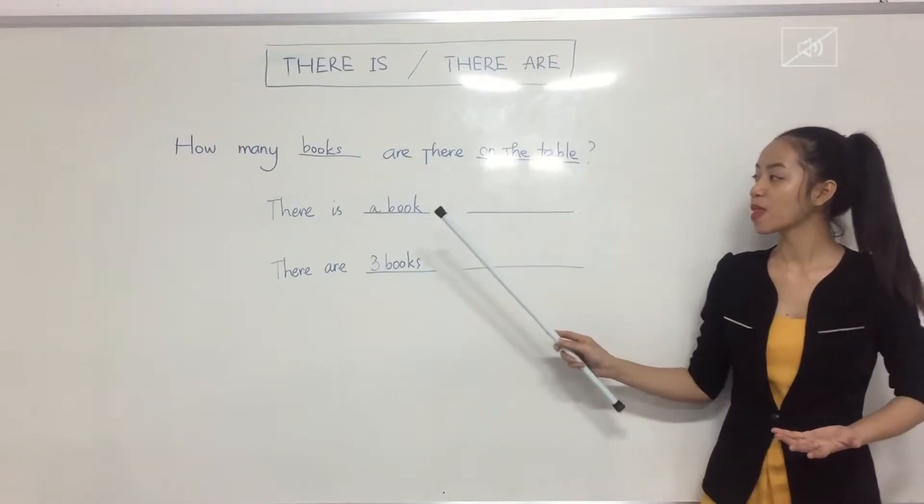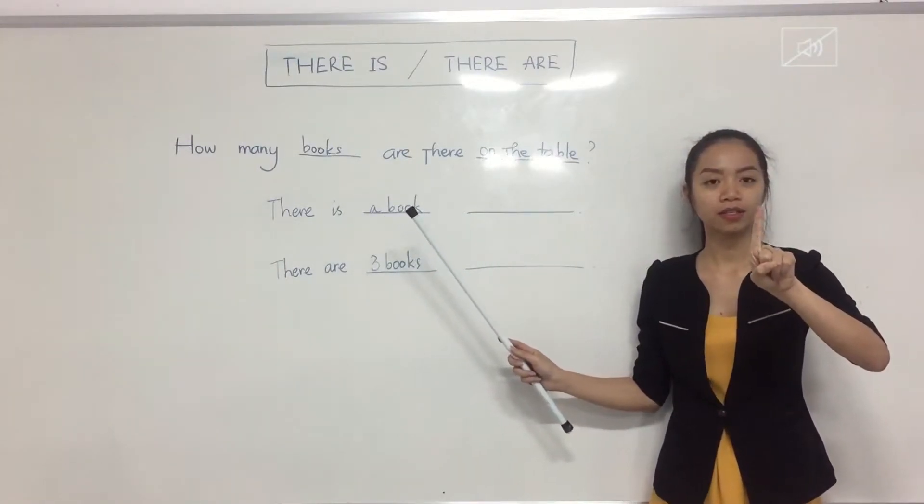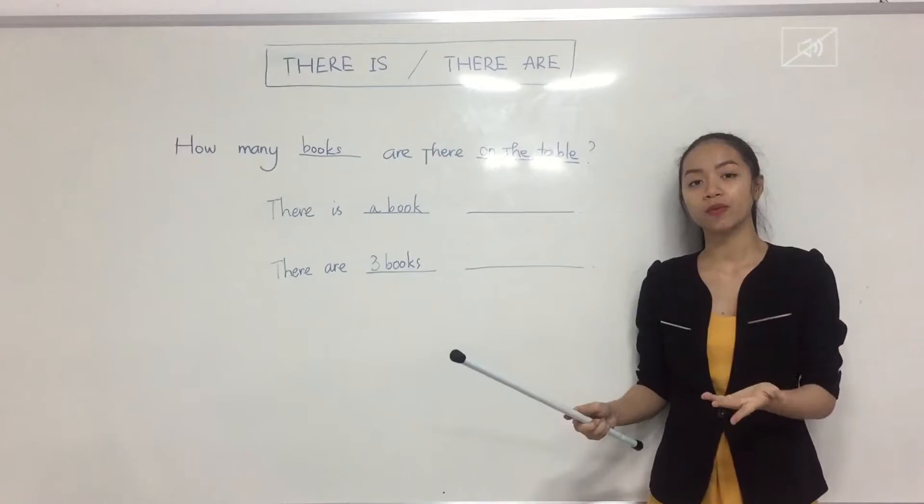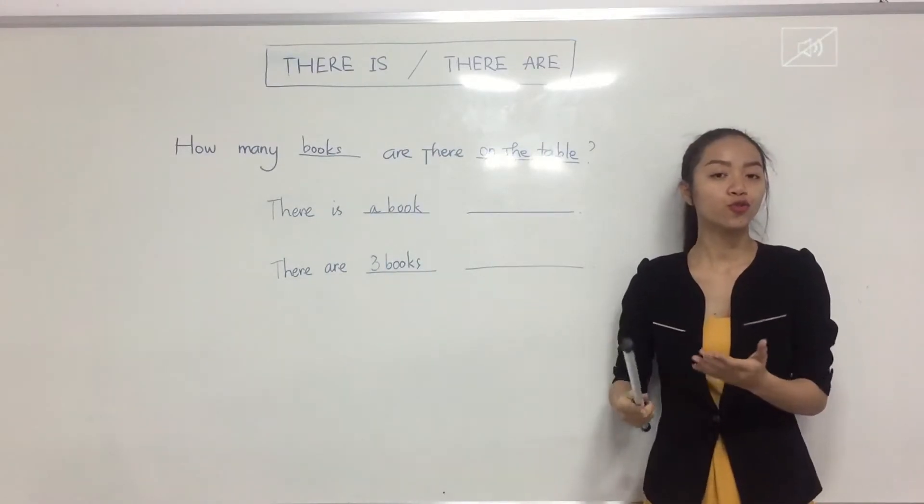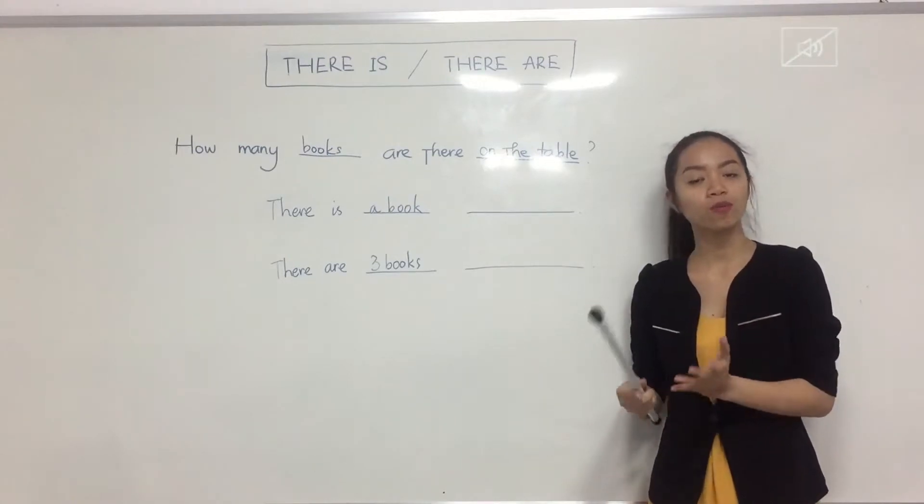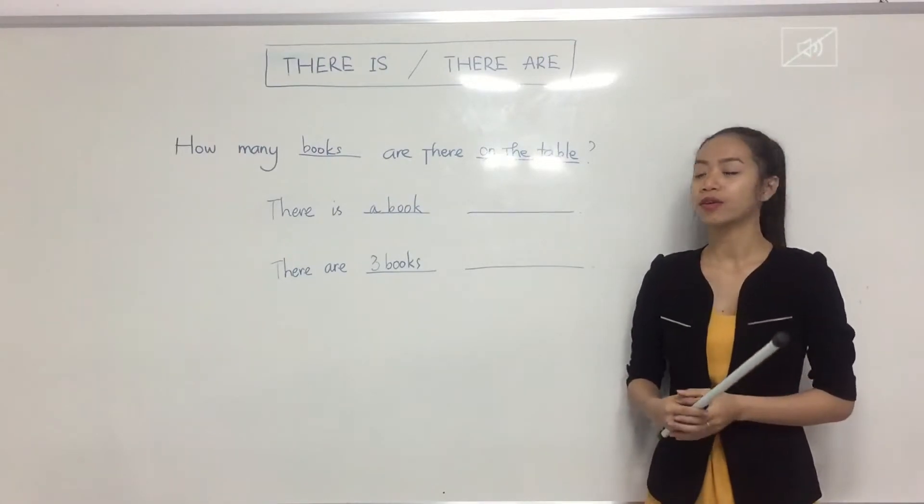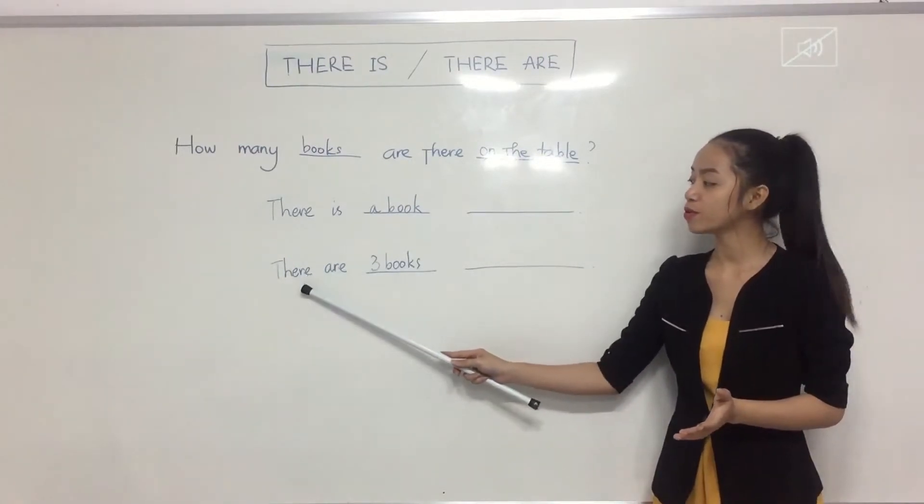So how to answer? If there is one thing in somewhere or on somewhere, you use there is. But if there are two, more than two or more than one thing, two and over two things, you use there are.